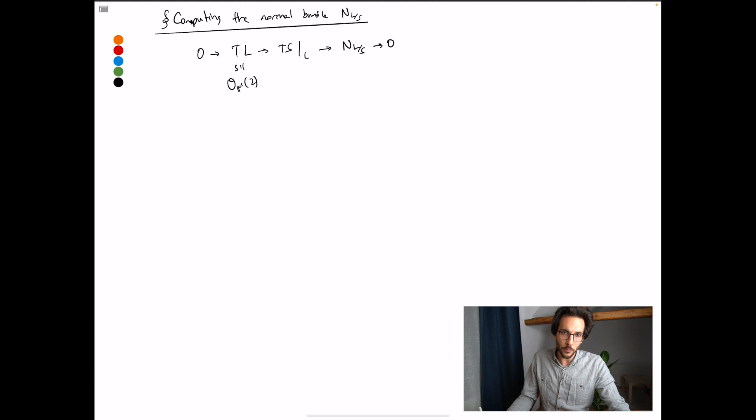In other words, a global section of this tangent bundle will have two zeros counted with multiplicity. But you might have heard of this as the hairy ball theorem. So remember P1, if you view it as the complex numbers, is a sphere. So the sphere, if you take a section of the tangent bundle, should have two zeros.